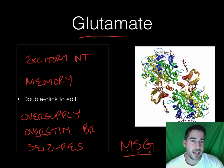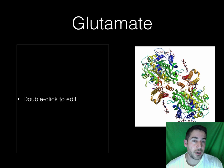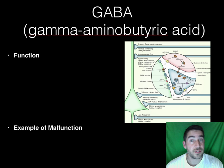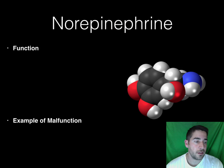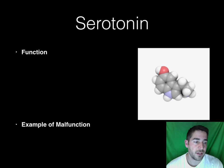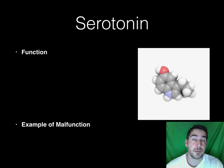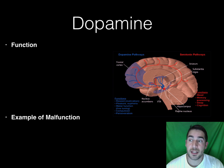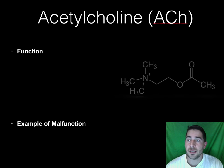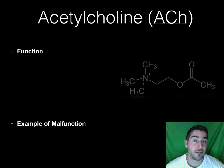So we have glutamate, an excitatory neurotransmitter — too much and you get seizures. You've got GABA, which is inhibitory — too little and you can have seizures, tremors, and insomnia. Norepinephrine can lead to a depressed mood if you don't have enough. Serotonin is a big one linked with depression, and we have the SSRIs — Selective Serotonin Reuptake Inhibitors. Dopamine is connected with schizophrenia if you have too much. And finally, acetylcholine and Alzheimer's. Those are the six major neurotransmitters, their functions, and what happens if there's a malfunction. We'll catch you in part four.